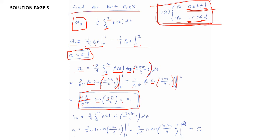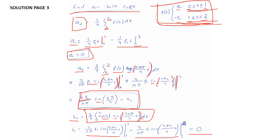Lastly, we evaluate bₙ. Starting with bₙ = (2/4)∫[0 to 2] p(t)·sin(2nπ/4 · t)dt and performing the integration, we find that the resulting terms cancel each other out, so bₙ = 0.